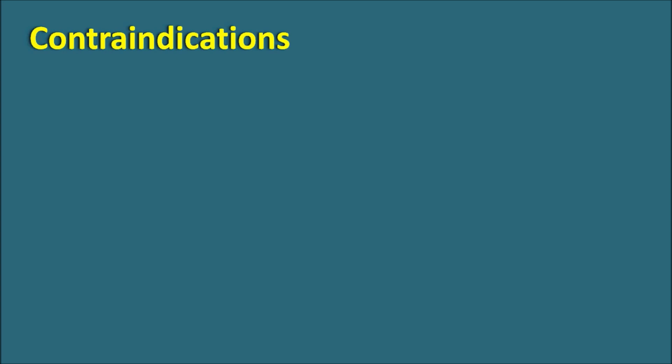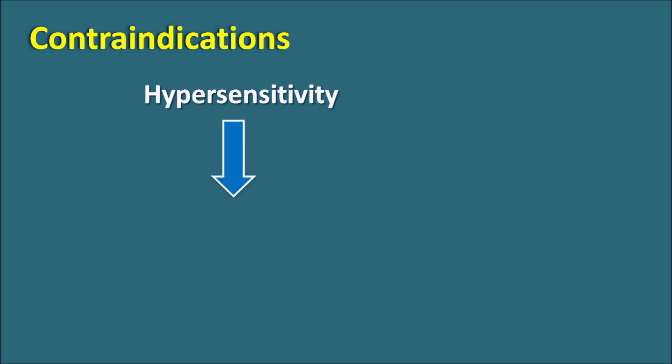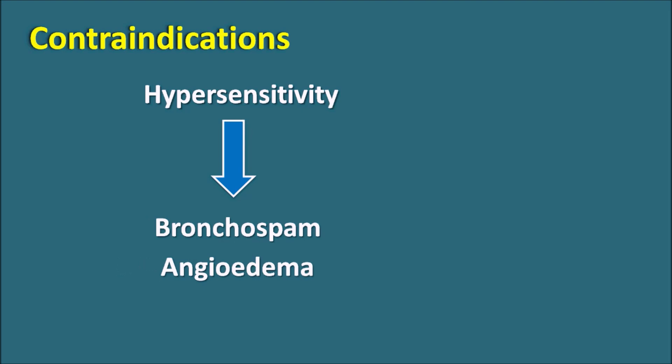Contraindications: where is calcitonin contraindicated? This drug is contraindicated in patients who have hypersensitivity reactions towards calcitonin. For example, if any patient presents with severe bronchospasm, angioedema, swelling of the lips, swelling of the tongue and throat, or any anaphylactic reactions, calcitonin is contraindicated in such conditions.